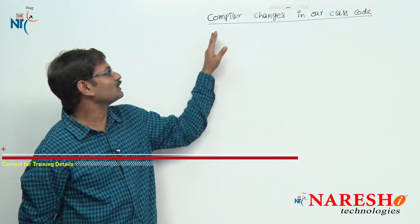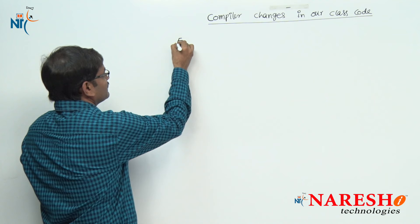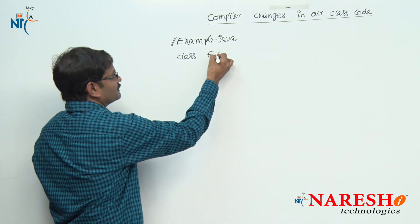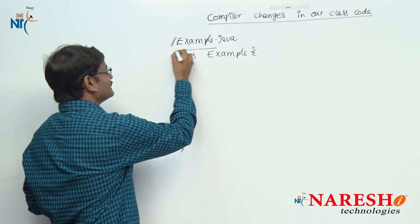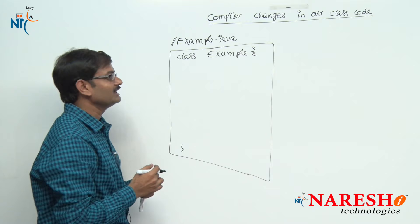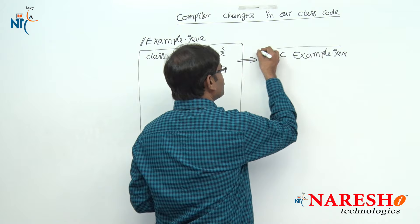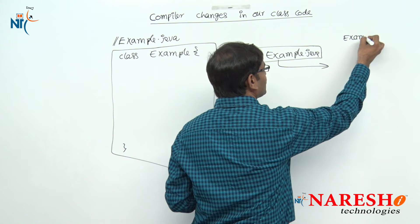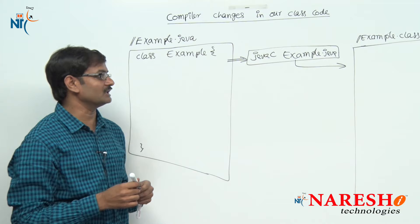The topic is compiler changes in our class code. Let me take one small example. I am taking one Java file — example.java. In this file I am creating an empty class called Example — just an empty class, no constructor, nothing. Then I compile it with the command: javac example.java. This is a really new topic — compiler changes in our class code.